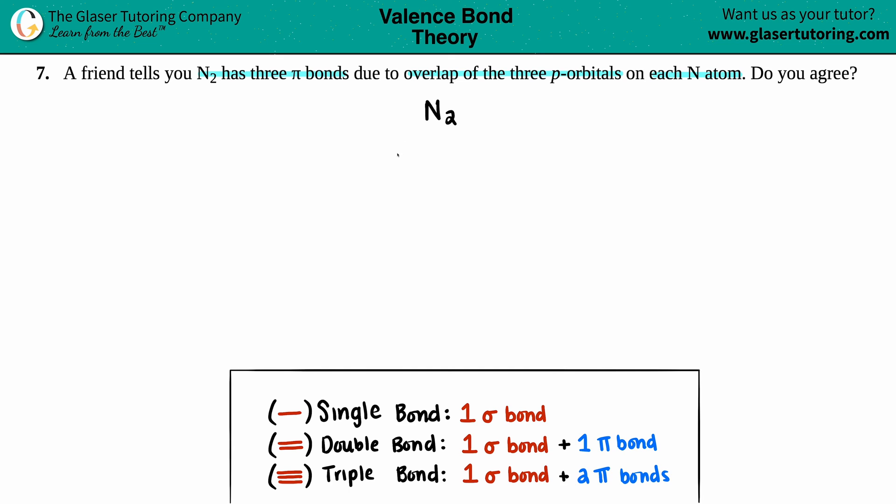And that means that I have two nitrogens right next to each other. Since nitrogen is in group 15 or 5A, I have five valence electrons, so I'll say one, two, three, four, five, one, two, three, four, five.